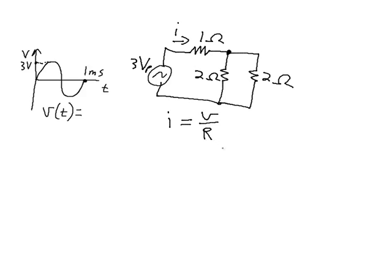So current is equal to voltage divided by resistance, and in this case the total resistance that this source sees, we can figure that out. Total resistance is going to be 1 ohm plus 1 over 2 plus 1 over 2, and then take the inverse of that. So this is a parallel combination of those 2 ohm resistors in series with that 1 ohm resistor. It works out to 2 ohms.